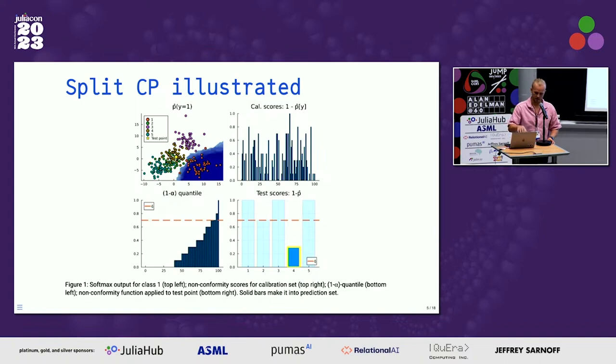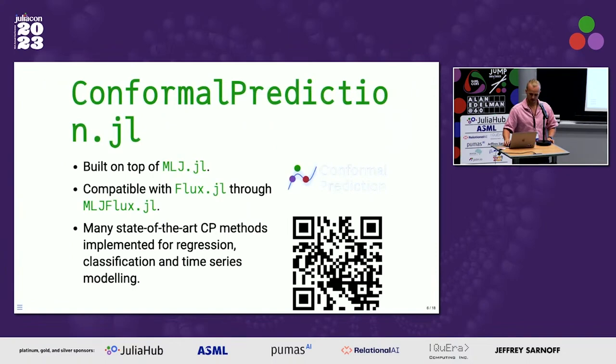In particular, in cases where the test point is near the decision boundary between two classes, the prediction set is typically larger — sometimes two labels are included. Where the classifier is quite certain, we just have one label included.